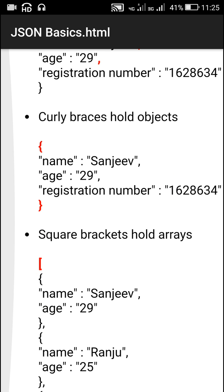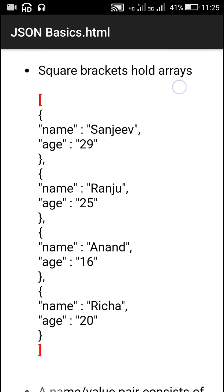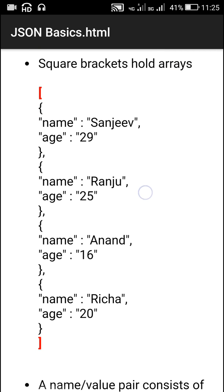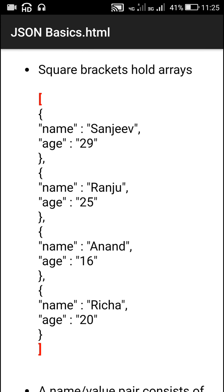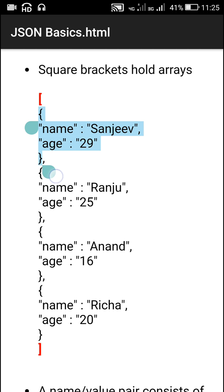Square brackets hold arrays, or an array of JSON objects. Here this is a JSON array held within square brackets shown in red, and it contains a JSON object. An array is also a list, so this is a JSON list which contains this JSON object.